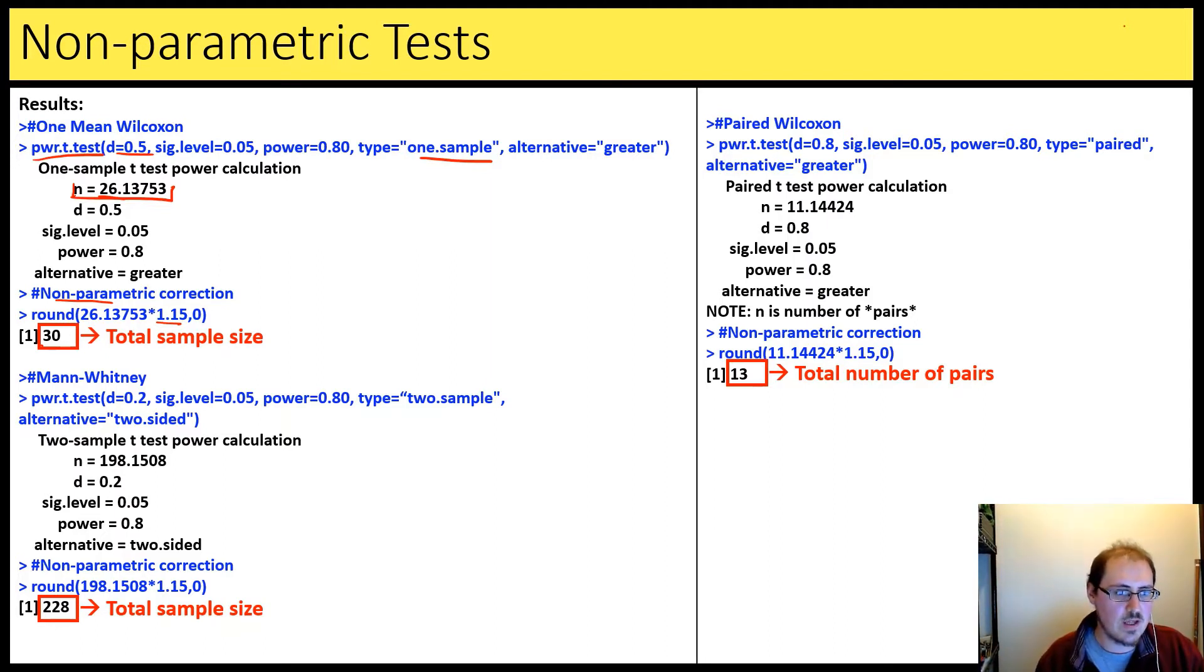For the Mann-Whitney, again, the power t-test, but instead we're doing two sample and it gives us 198 times 1.15. Rounding up is 228.